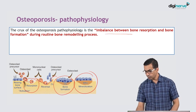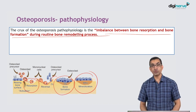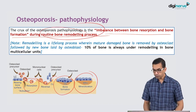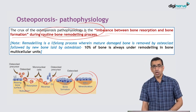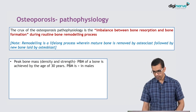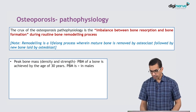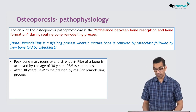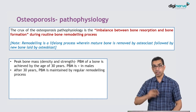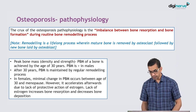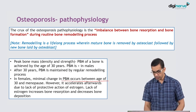This is a routine bone remodeling process that is lifelong. Overall, 10% of your body's bone is always under the remodeling process. Peak bone mass is achieved by age 30 and is higher in males. After 30, peak bone mass is maintained by regular remodeling — part is removed and part is replaced. In females, minimal change in peak bone mass occurs between age 30 and menopause, but after menopause the decline is relatively accelerated.